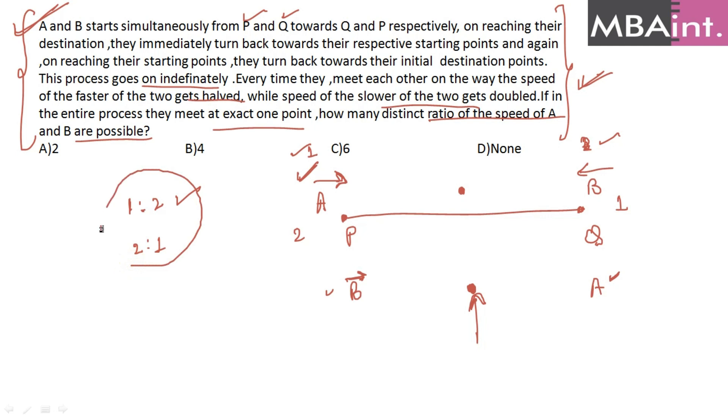So the ratio either would be one is to two or two is to one. That's the only possibility. Why am I so confident? Because they are meeting exactly at one point every time they are returning back from their destination. The ratio should be either one is to two or two is to one, depending on which person is the faster one. So guys, your required answer is two.